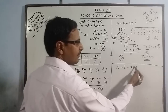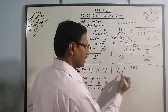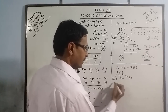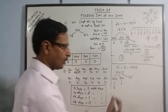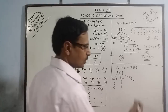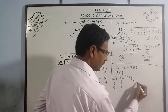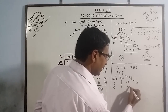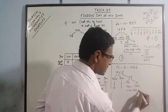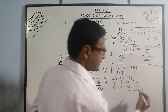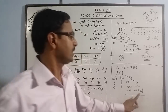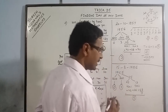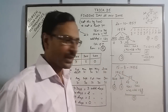For 15th August 1956: since 1956 is incomplete, we have 1955 complete years. Divide into 1600, 300, and 55. 1600 gives 0 odd days, 300 gives 1 odd day. For 55 years: 55 divided by 4 gives 13 leap years and 42 normal years. 42 normal years contribute 42 odd days and 13 leap years contribute 26 odd days, totalling 68. 68 divided by 7 gives remainder 5. So total odd days up to 1955 = 0 plus 1 plus 5 = 6 odd days.